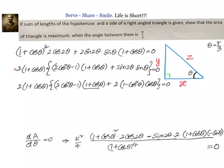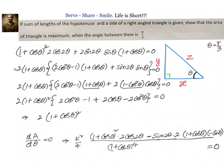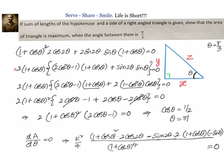We have a sum-of-products form and a difference-of-squares factor. Taking one more (1 + cosθ) common, it becomes 2·(1 + cosθ)²·(2cos²θ − 1 + 2cosθ − 2cos²θ). Setting 1 + cosθ = 0 gives cosθ = −1, i.e., θ = π, which is not valid.